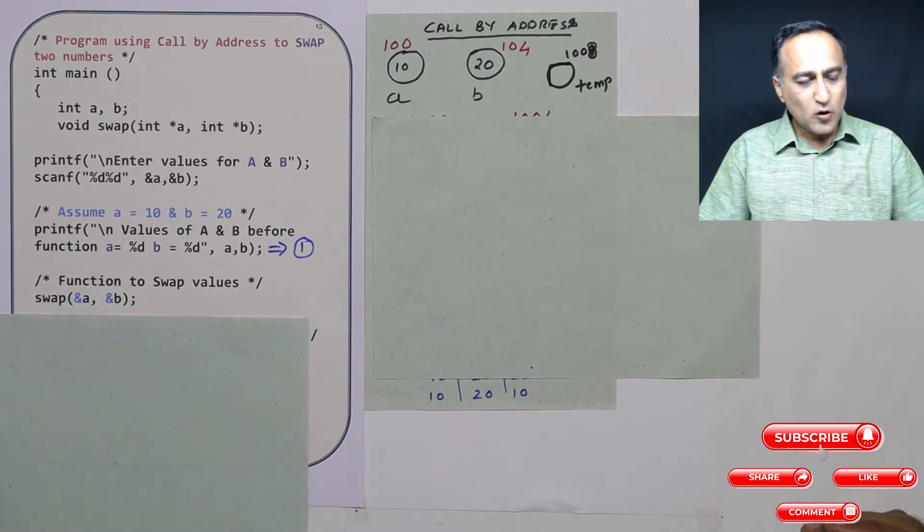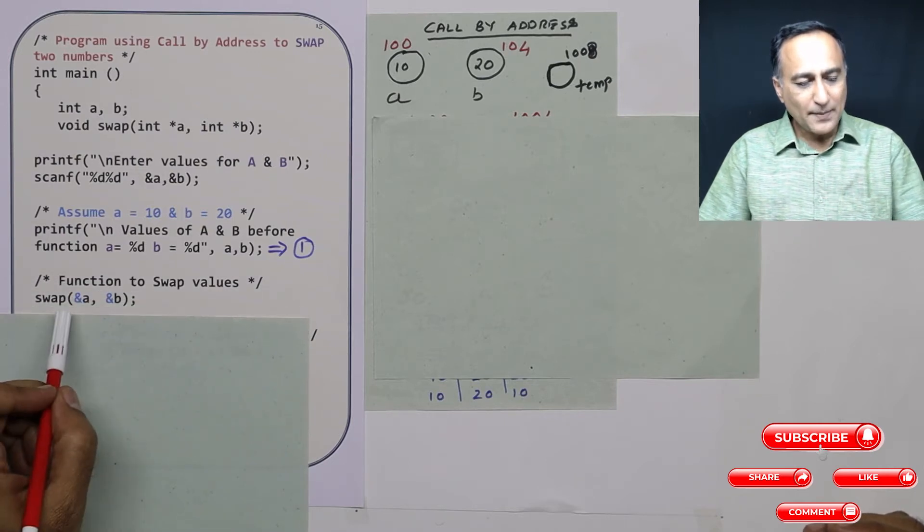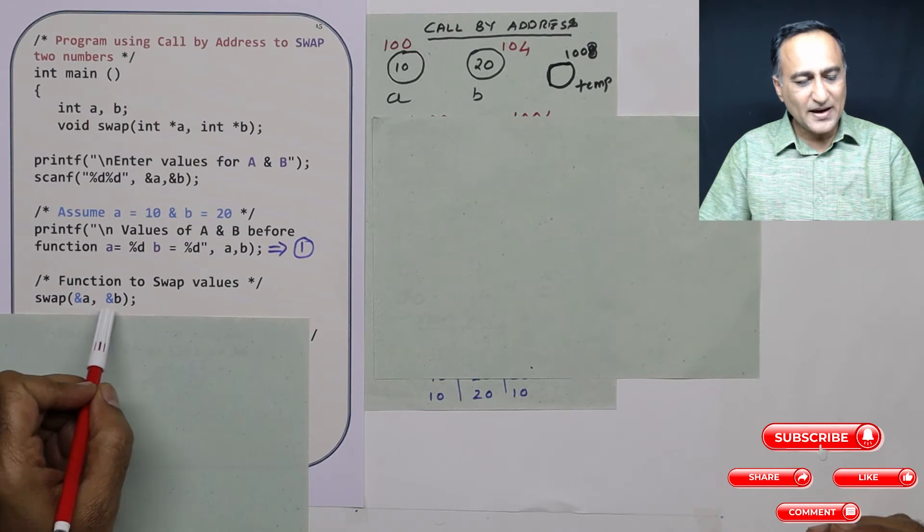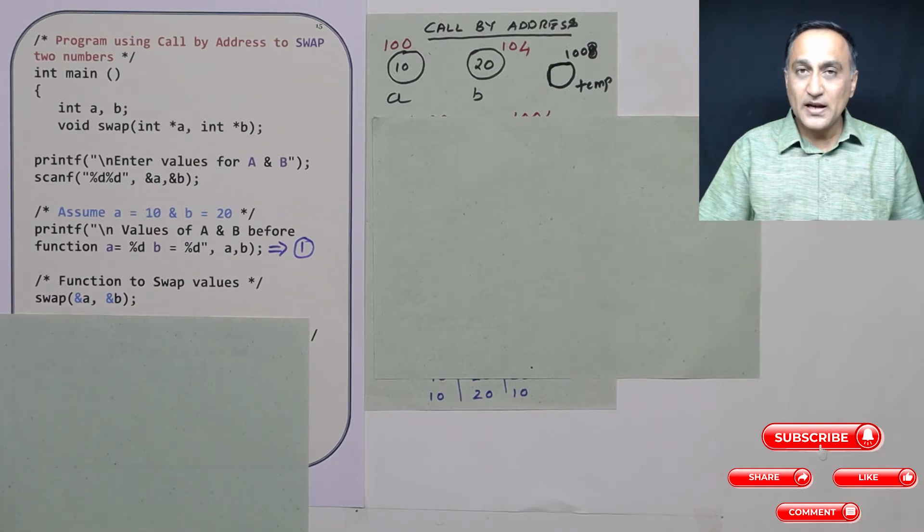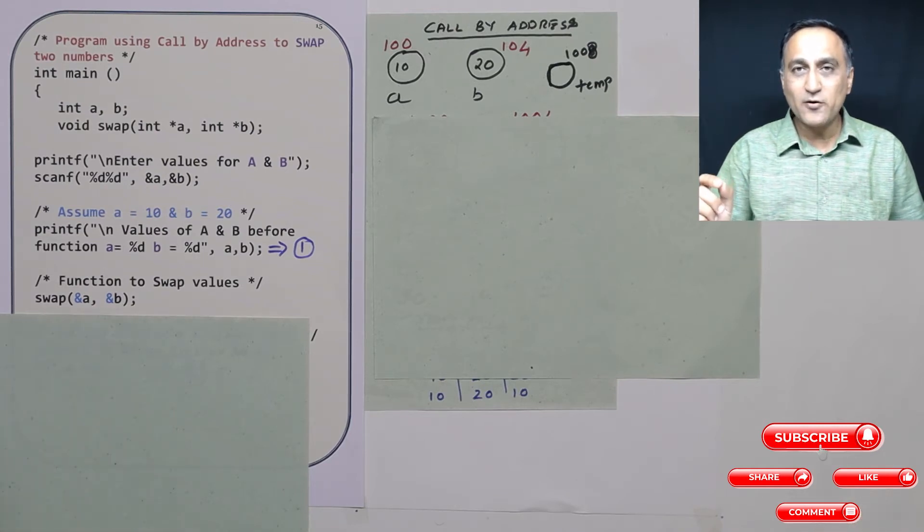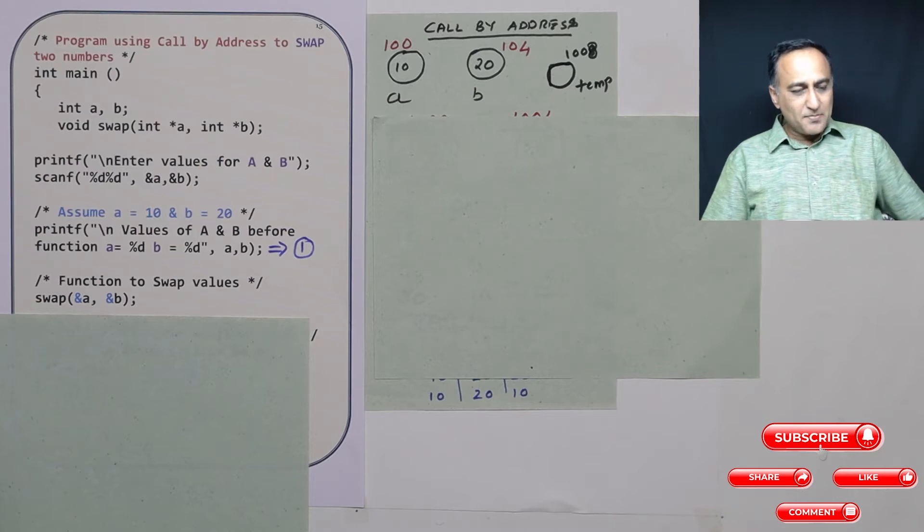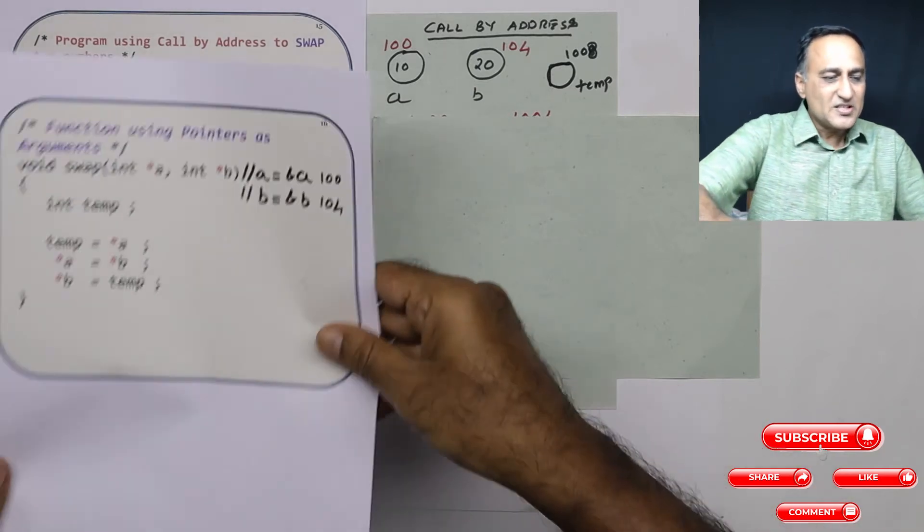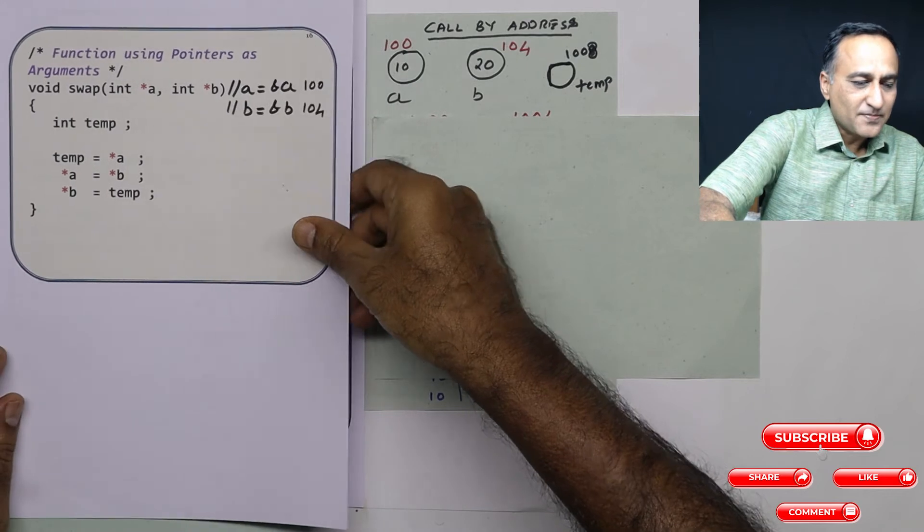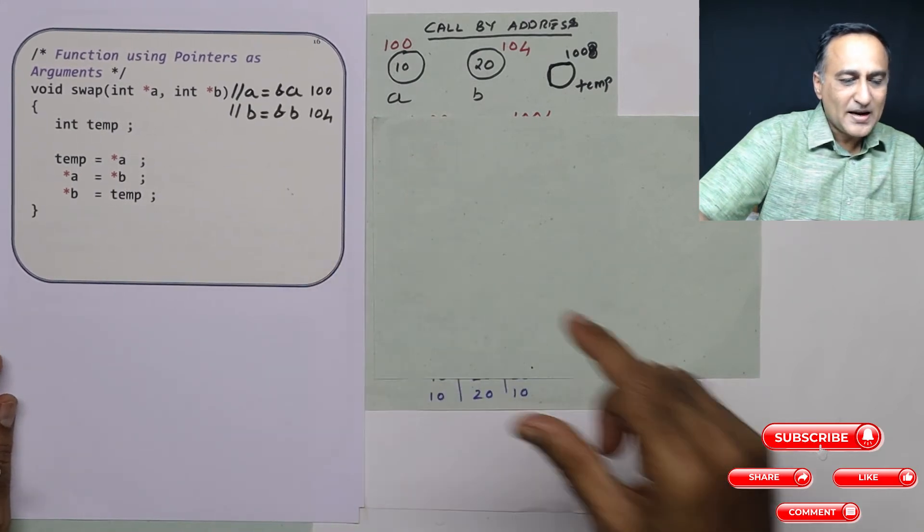Now I am calling a function called swap. I am passing the address of a and address of b. Now I am simply not passing the value of a and b. I am giving the address of a and b. So when I give the address of a and b, this is what really happens.